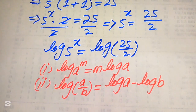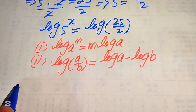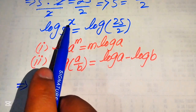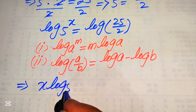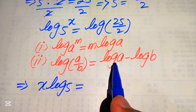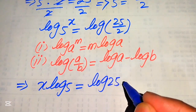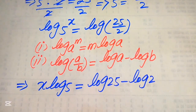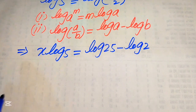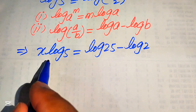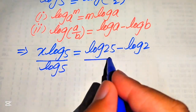We apply the first property of log on the left hand side and the second property on the right hand side. After applying the first property, we move x to the front, giving x times log 5. On the right hand side, applying the second property gives log of 25 minus log of 2. To solve for x, we divide both sides by log of 5.